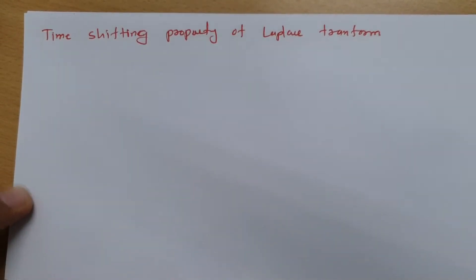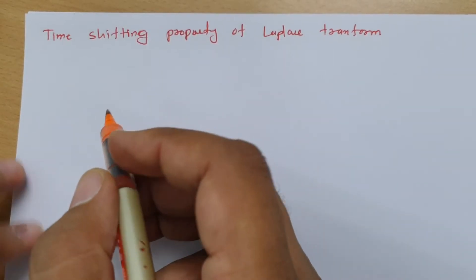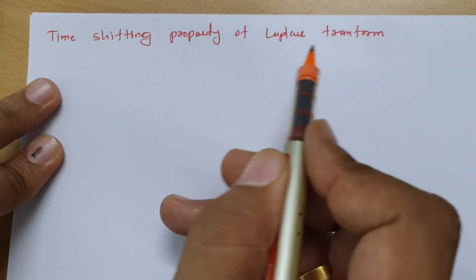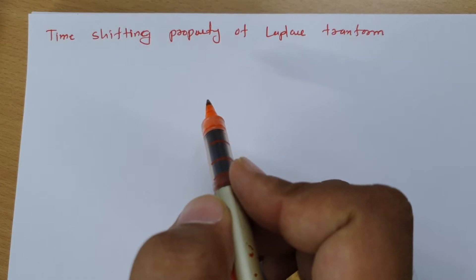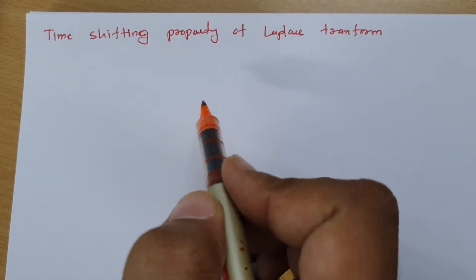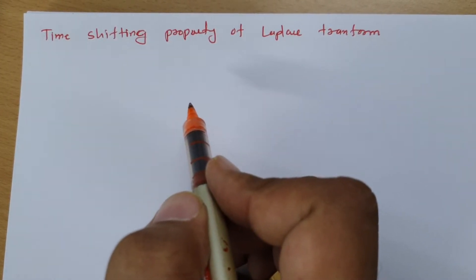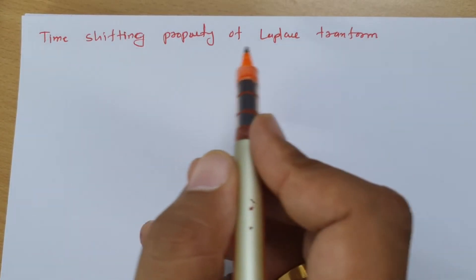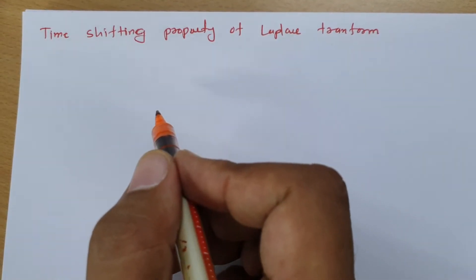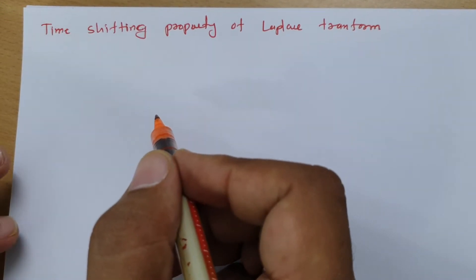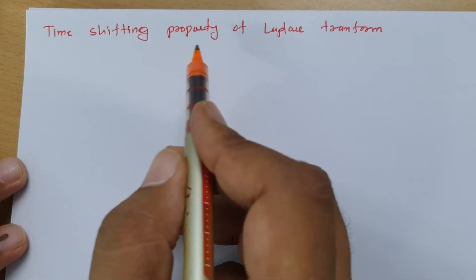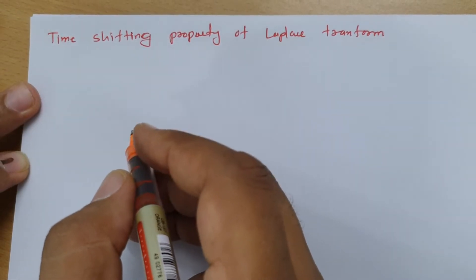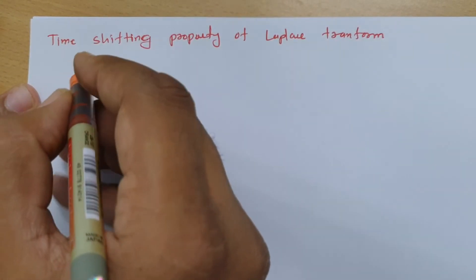Welcome to the Signal and System lecture series. In this session, I will be explaining the time shifting property of Laplace transform. Earlier I have already explained the basics of properties of Laplace transform where I defined the time shifting property. But here I will be deriving how that relation comes. So let me define it first and then we will derive that property.